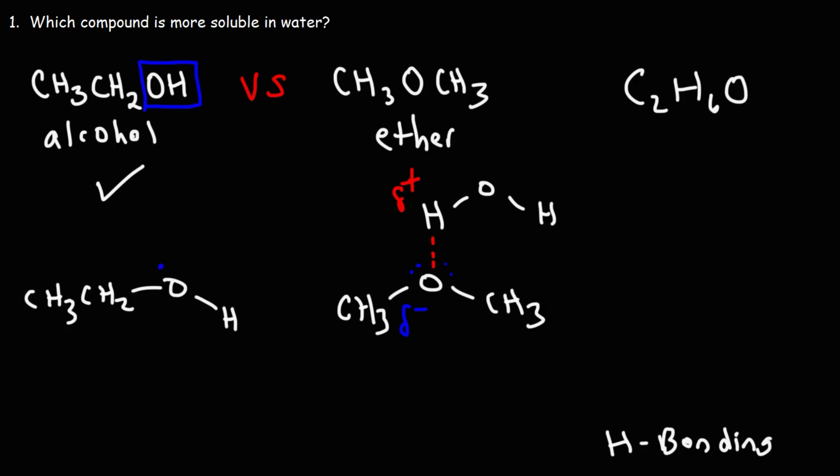So here is the OH group of ethanol. Notice that the oxygen in ethanol can form a hydrogen bond with the hydrogen atom in water. But also the hydrogen atom in ethanol can also form another hydrogen bond with water. So the ether can only act as a hydrogen bond acceptor.